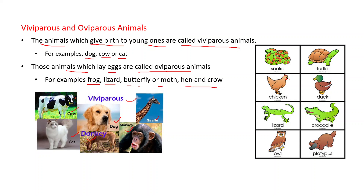You can also see the diagram showing oviparous animals such as snake, turtle, chicken, duck, lizard, crocodile, and owl.